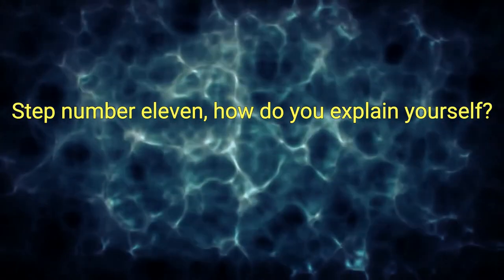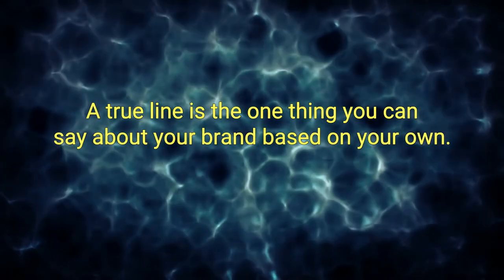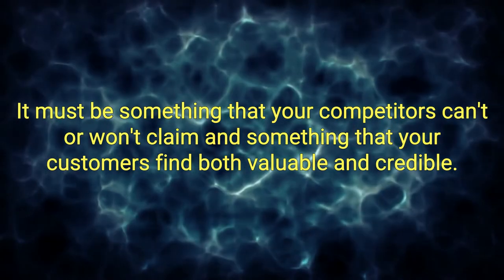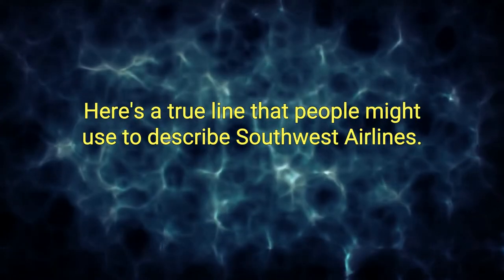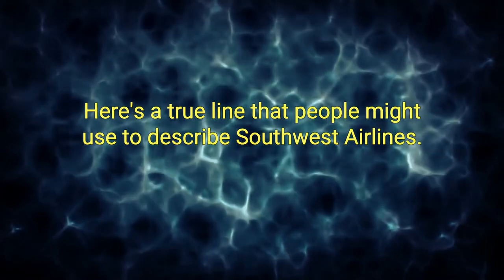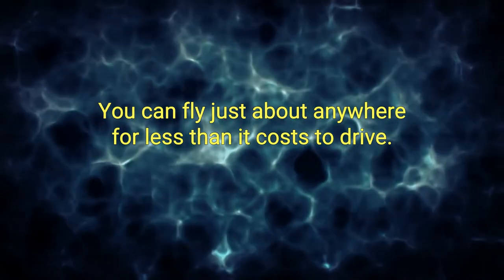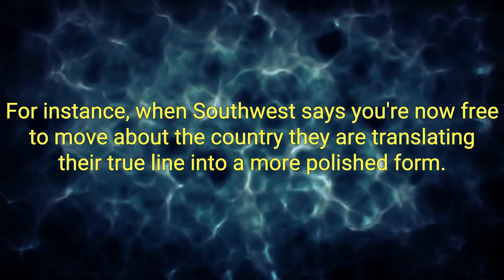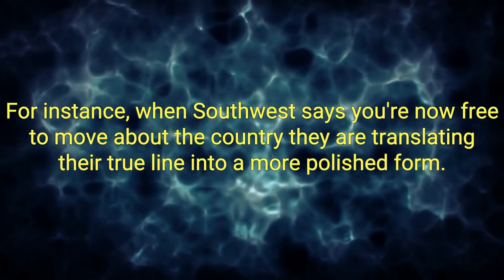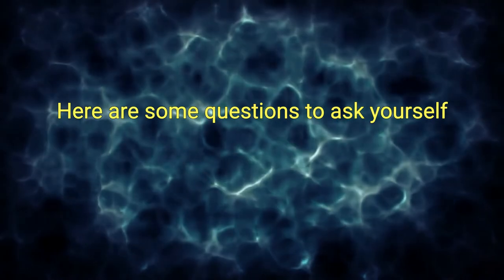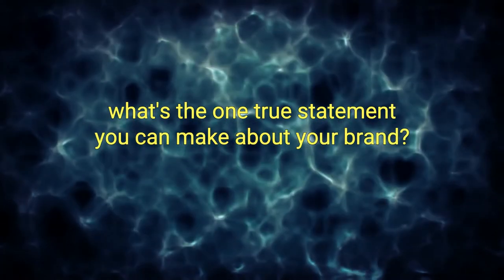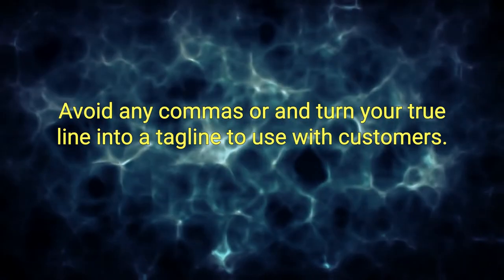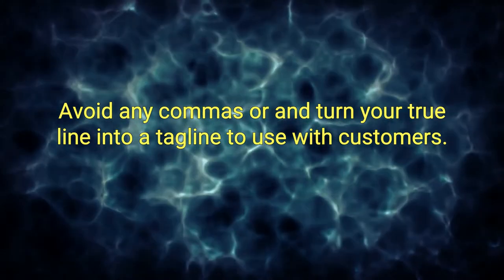Step number 11, how do you explain yourself? Which is a communication element. A true line is the one thing you can say about your brand based on your onlyness statement. It must be something that your competitors can't or won't claim, and something that your customers find both valuable and credible. Here's a true line that people might use to describe Southwest Airlines: You can fly just about anywhere for less than it costs to drive. Once you have a true line, it's a short step to a customer facing tagline. For instance, when Southwest says, you're now free to move about the country, they are translating their true line into a more polished form. Here's some questions to ask yourself: What's the one true statement you can make about your brand? Here are some action steps to take: Craft a true line that tells why your brand is compelling. Avoid any commas or ands and turn your true line into a tagline to use with customers.